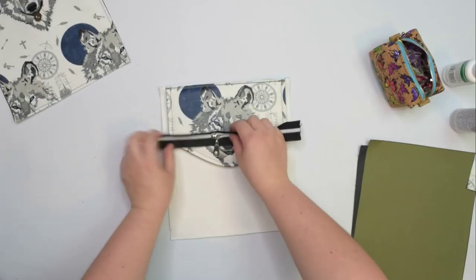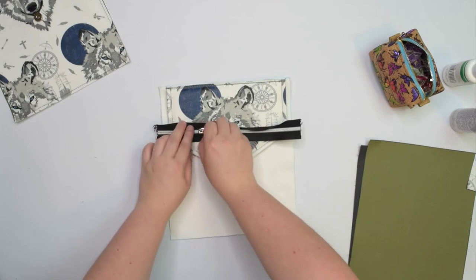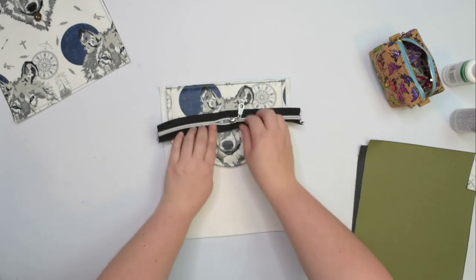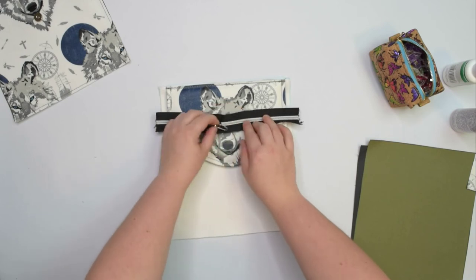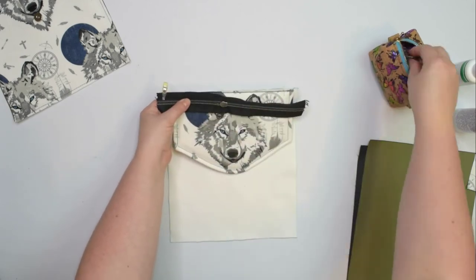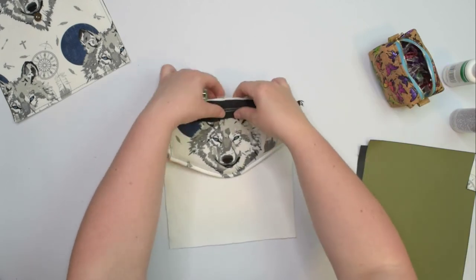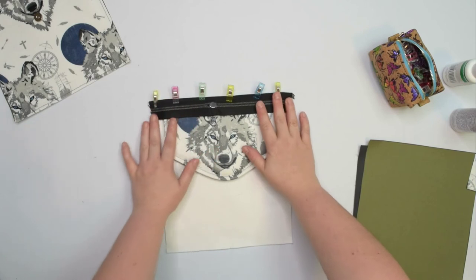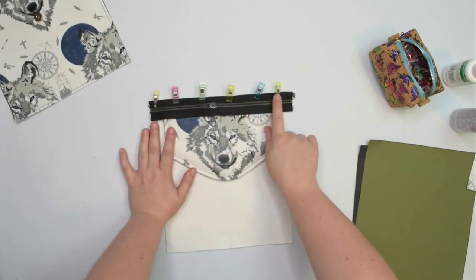Take the shorter number 5 zipper and decide which way you want the zipper to open. I like the zipper to open from left to right. Then place it facing down on top of the flap, line up along the top edge and clip it in place. You can baste the zipper using 5mm seam allowance.